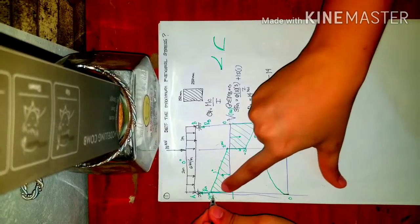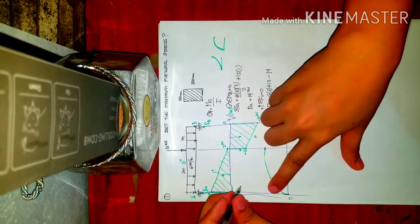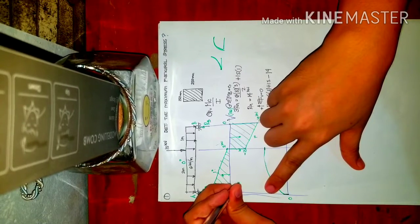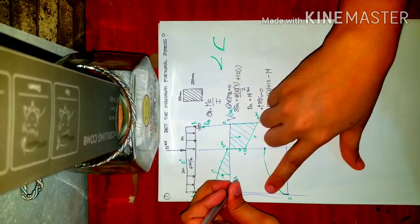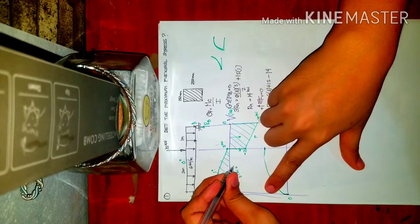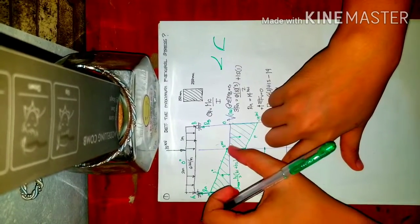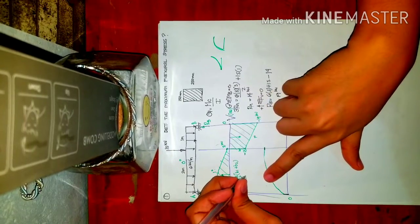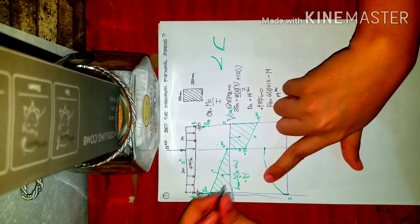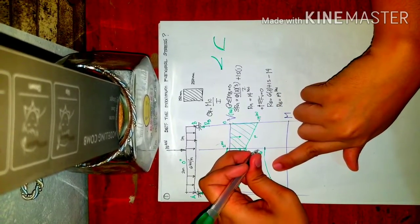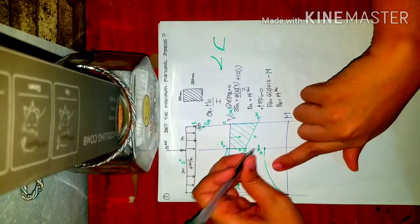To get the moment value, take the area of the trapezoid in the shear diagram. Area of trapezoid = h/2 × (base1 + base2) = (2/2) × (14 + 2) = 16 kN·m. So the moment at the concentrated load location is 16 kN·m.